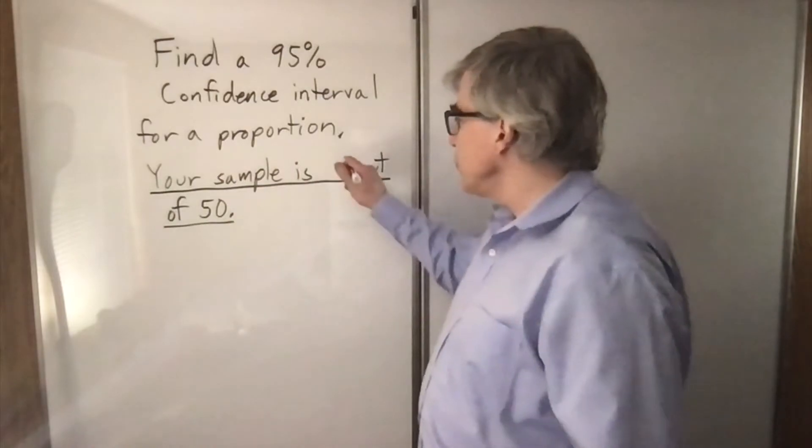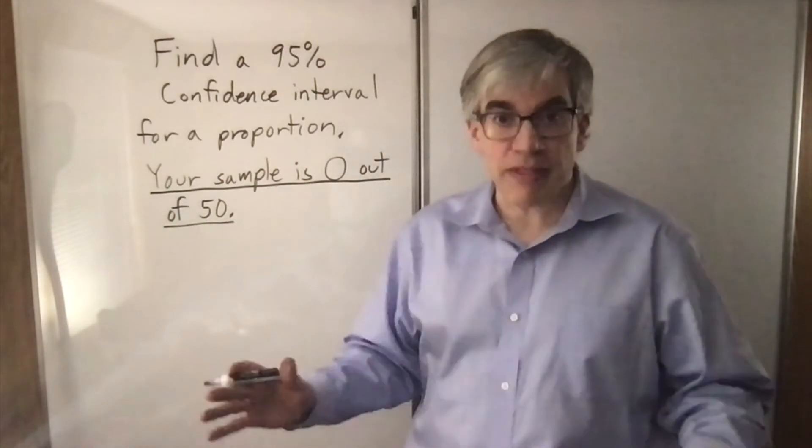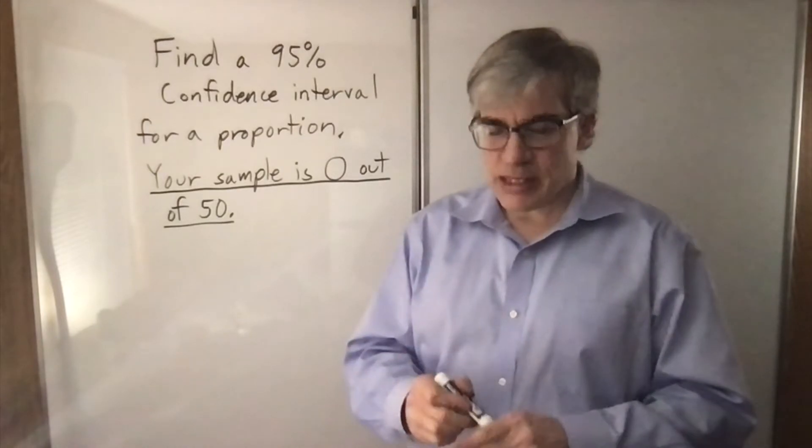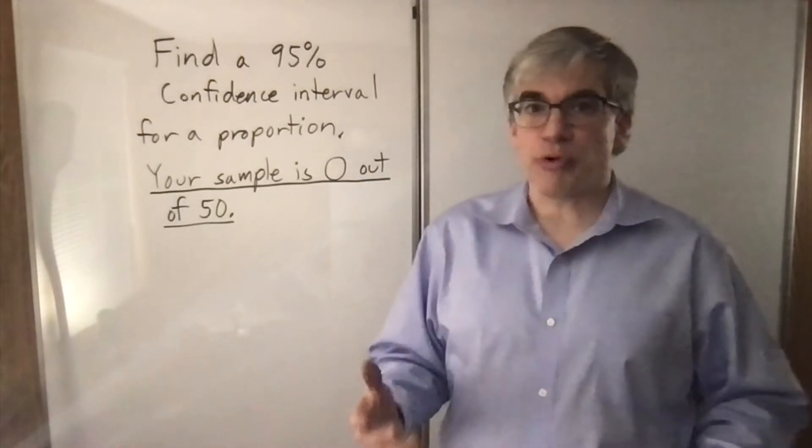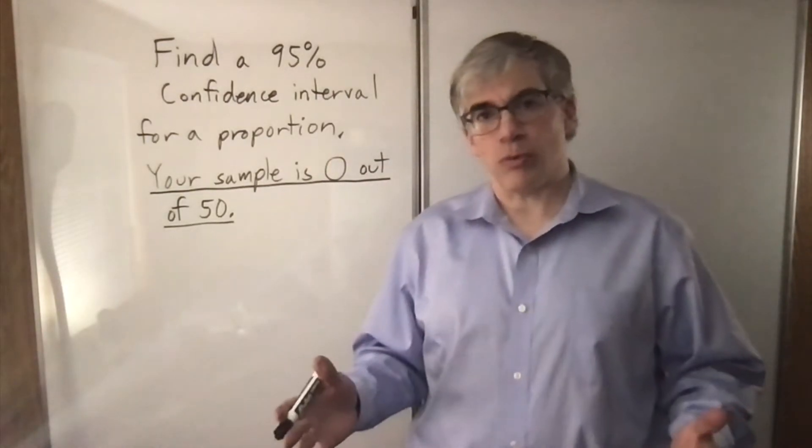The problem is, what if your sample came out to be zero? Like, you tried 50 times, you got nothing. So it seems possible that the actual proportion is zero. But how do you make a confidence interval? How high up do you go?